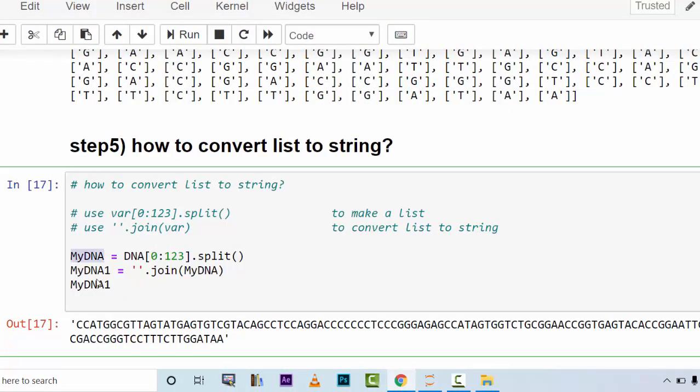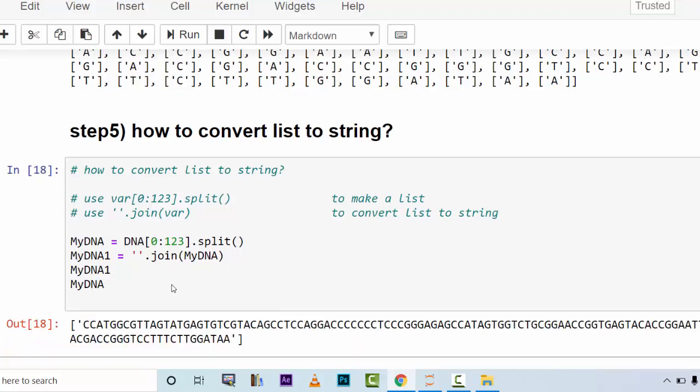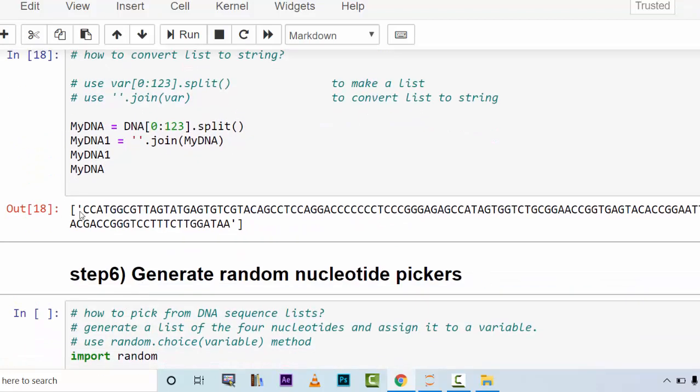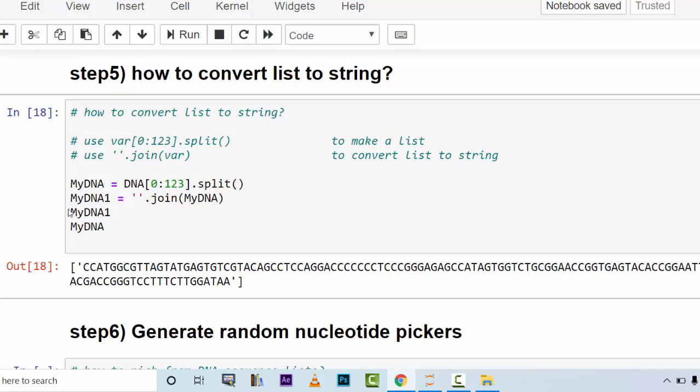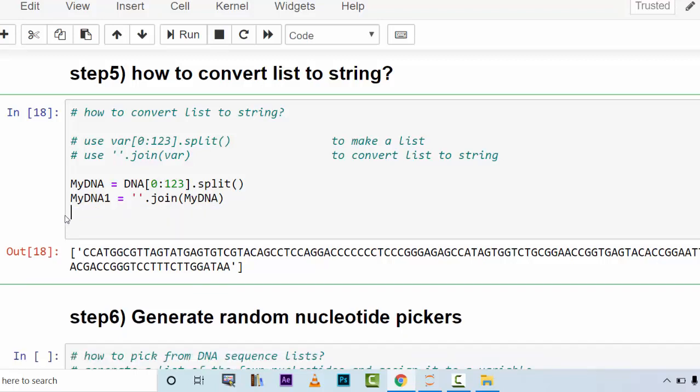So myDNA was actually a list, myDNA1 is now a string. You can also show myDNA. This one is the list, and this one was the string being generated from the list.